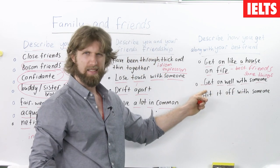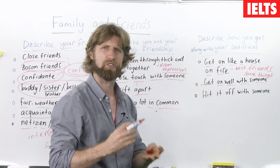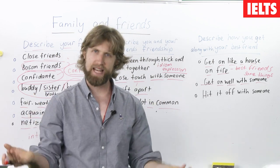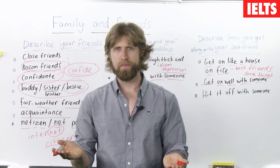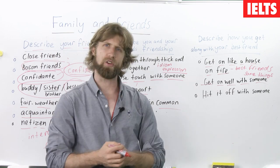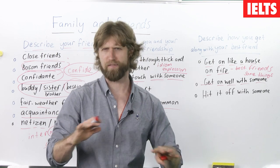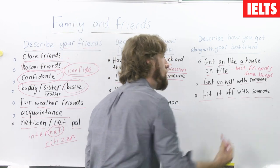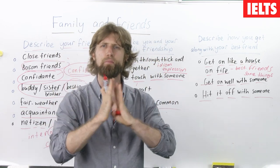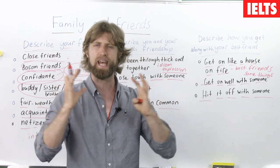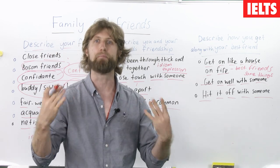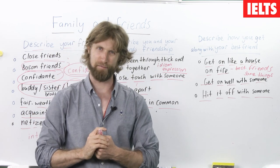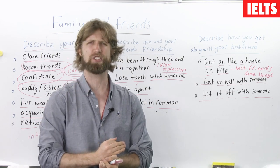Get on well with someone is not as strong as saying we get on like a house on fire. It just means you like each other's company and never feel angry or upset with each other. So you can say: I have a co-worker and I get on very well with him. Or: I don't get on well with my brother — we have a lot of arguments — but my sister, I get on very well with her. Hit it off with someone means the first time the two of you meet each other, you feel a connection and an energy — you feel that both of you like talking to each other. So you can say: the first time I met her, we hit it off and we got on like a house on fire.